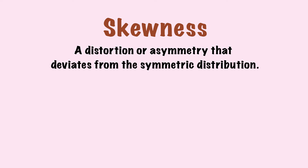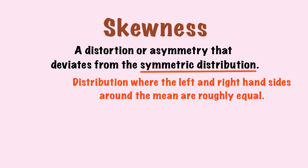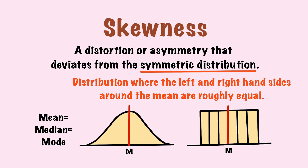After discussing the basic statistics, we can now look at skewness. Skewness is a distortion or asymmetry that deviates from the symmetric distribution. Symmetric distribution is the distribution where the left and right hand sides around the mean are roughly equal — for instance, the normal and uniform distributions are symmetric, since the left and right parts around the mean are mirror images. One important characteristic of symmetric distribution is that the mean, median, and mode are equal.